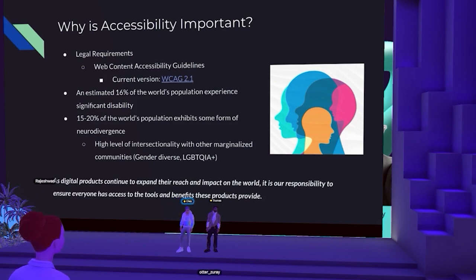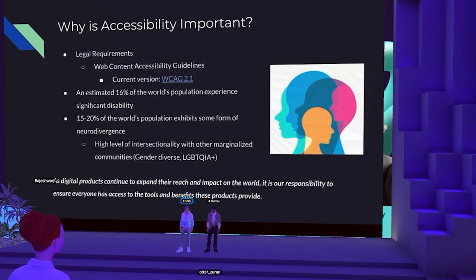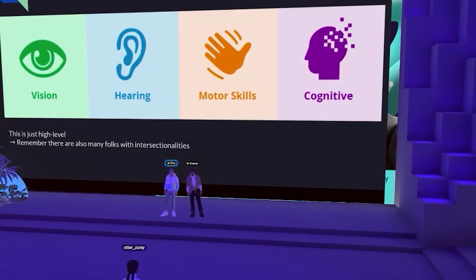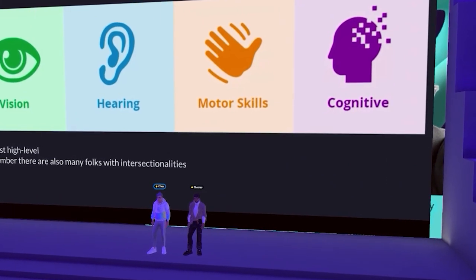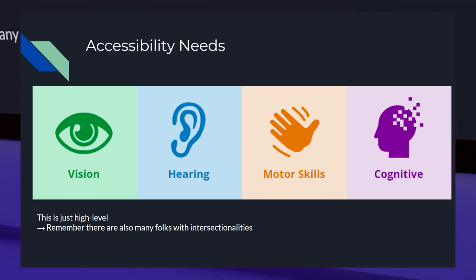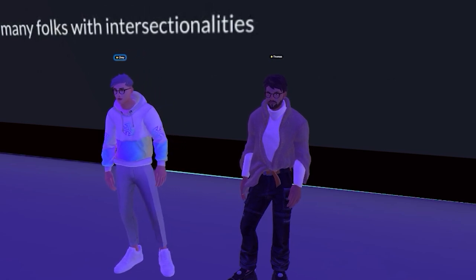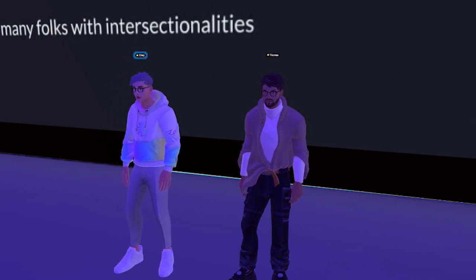The web content accessibility guidelines are linked in this slide — very thorough, with checklists and different levels of requirements: 100% required versus nice to have. These are the four main needs folks might deal with, though remember this is very high level. The main ones are vision, hearing, motor skills, and cognitive. Vision doesn't always mean someone who is blind — it could be low vision, light sensitivity, or color blindness.